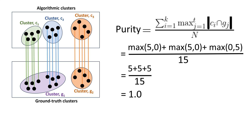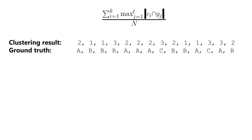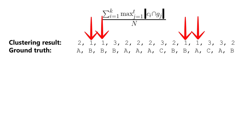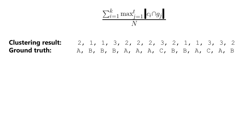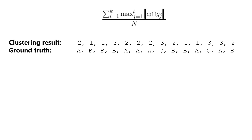Purity measures how pure the clustering result is given a ground truth — it is not exactly about cluster matching. Now let's look at another example with an algorithm's output and ground truth labels. There are 14 numbers in the algorithmic cluster output, meaning the original data table has 14 rows. The cluster assignments are 1, 2, and 3, indicating three clusters. The ground truth also has three clusters with labels a, b, and c — these are the 14 ground truth labels. We will compute purity of the algorithmic clustering in reference to this ground truth.